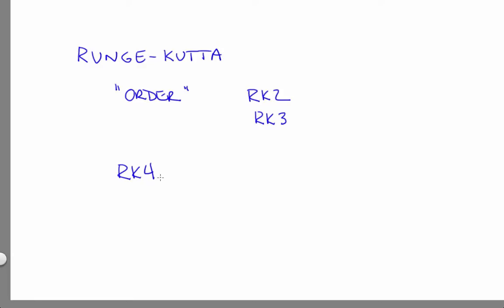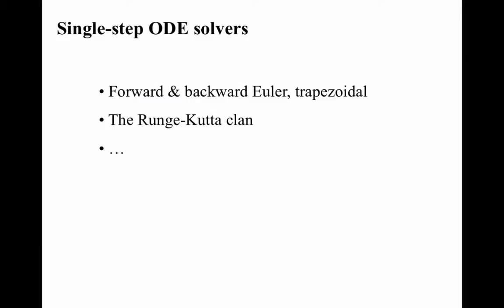Forward Euler, backward Euler, trapezoidal, and the Runge-Kutta clan are what are called single-step methods. Separating these out is actually a little bit deceptive because forward Euler, backward Euler, and trapezoidal are actually members of the RK clan. Forward Euler and trapezoidal are RK1 and RK2, respectively. Backward Euler is an implicit version of RK1. They work forwards from the current point on the dynamical landscape — just that single point.